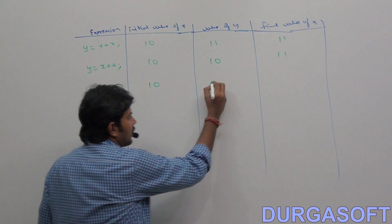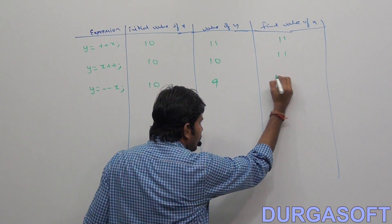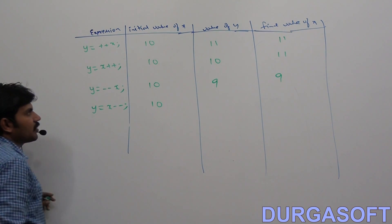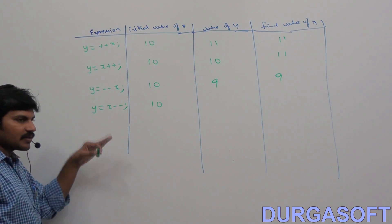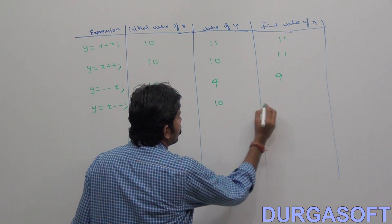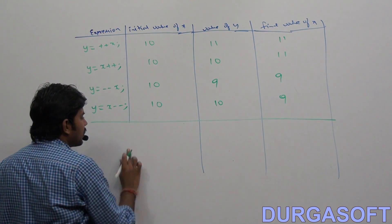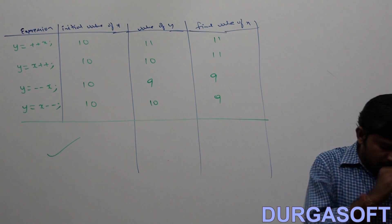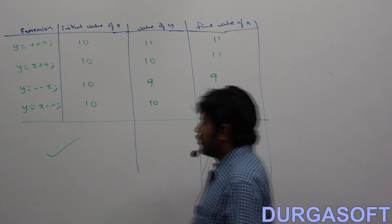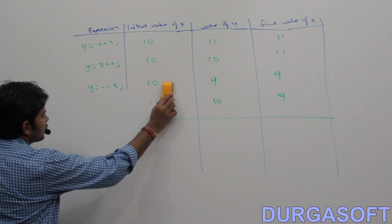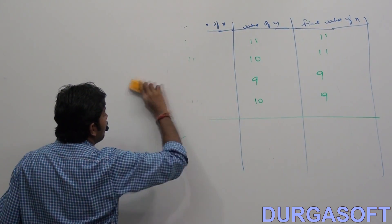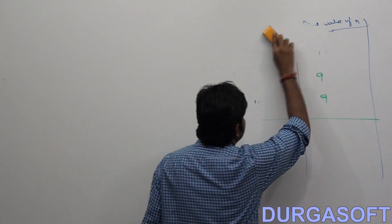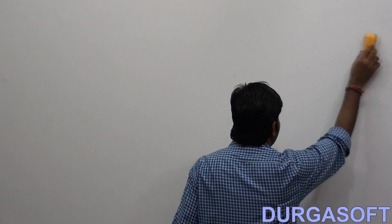For pre-decrement: y equals --x with x equal to 10 — first decrement, then assign. For post-decrement: y equals x-- with x equal to 10 — first assign, then decrement. Now, up to this point I don't think you've seen any new information. The next things related to Java have several new points you're going to encounter — loopholes related to Java.